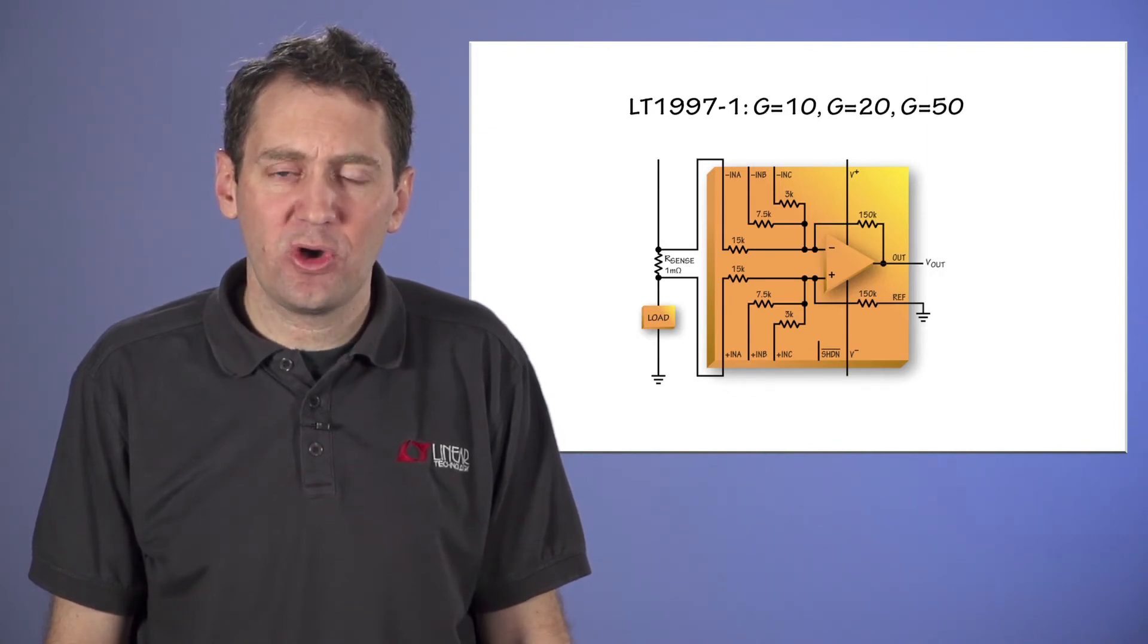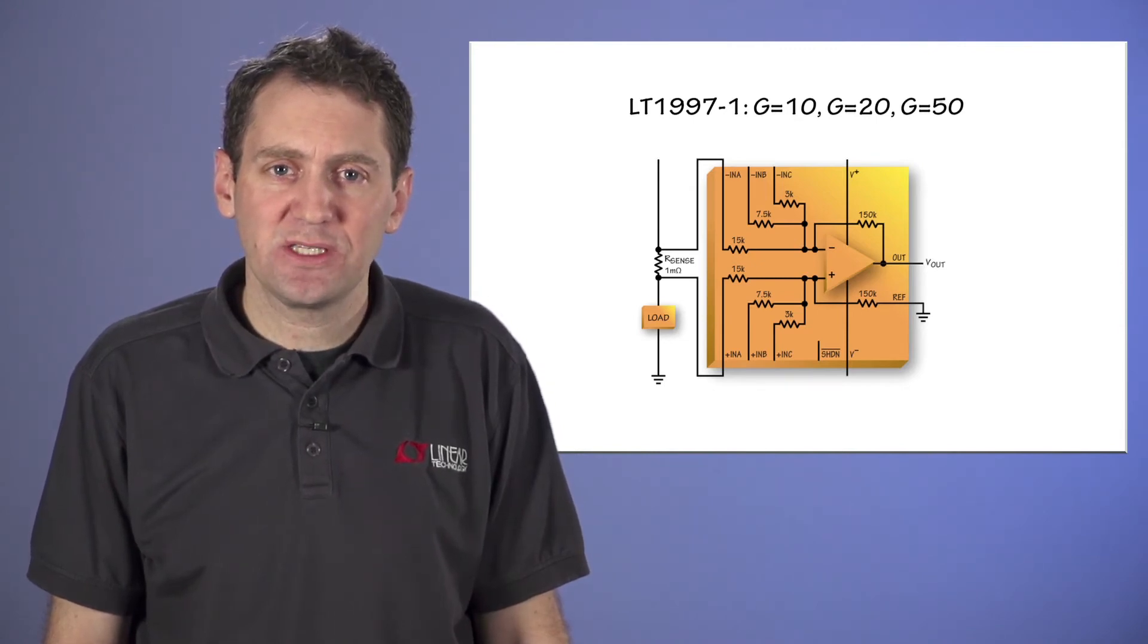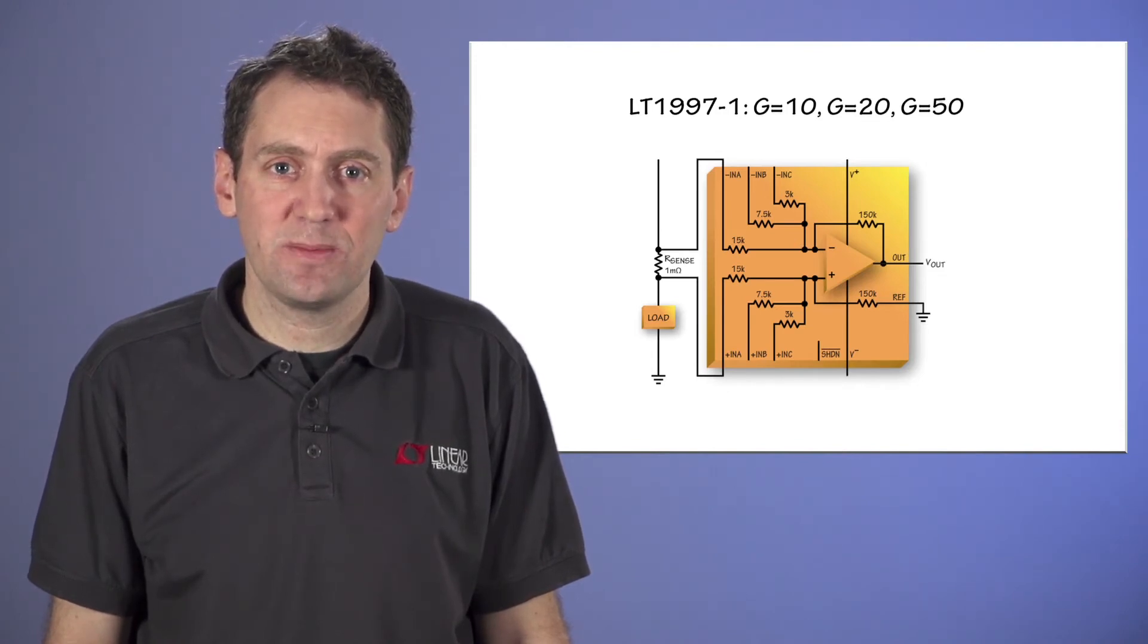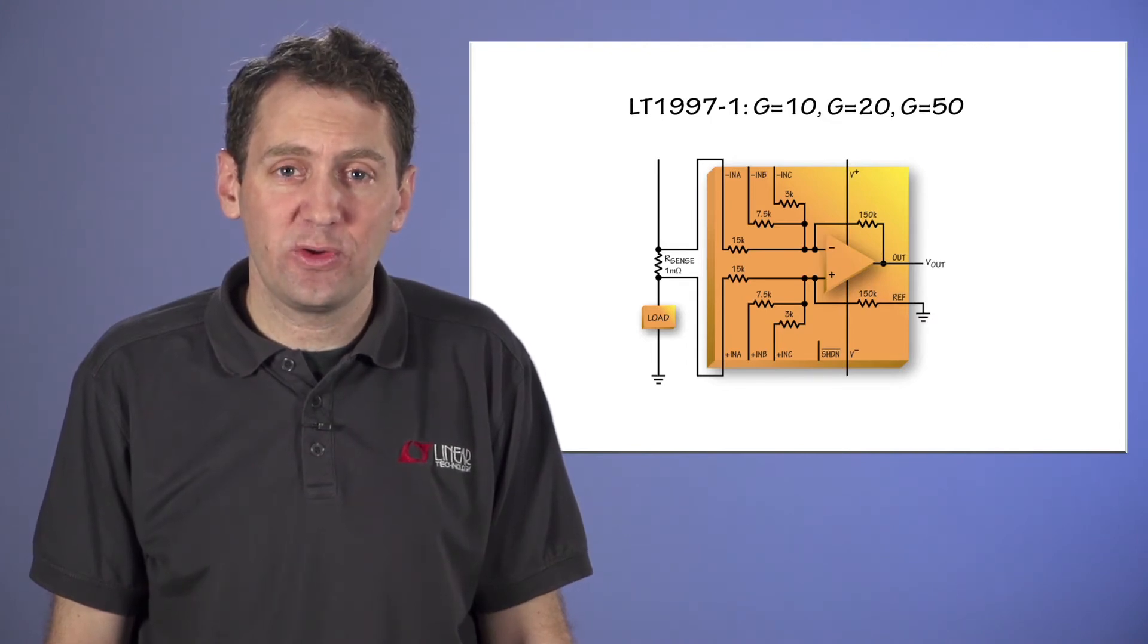The op amp inputs also operate at voltages down to the negative supply and are protected to voltages well below it. The result is that the absolute voltages that you can put at the resistor inputs to the circuit can be quite high, up to 84 volts depending on the supply rails applied to the op amp.